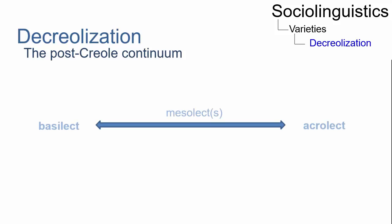Decreolization thus creates a continuum ranging from the basilect to the acrolect. In between there is a spectrum of intermediate varieties, the mesolects.